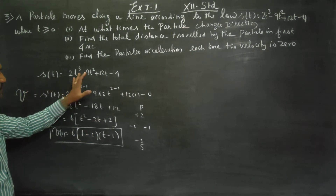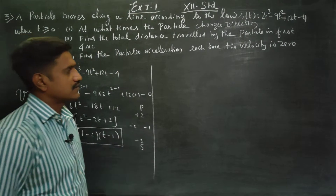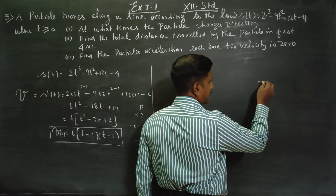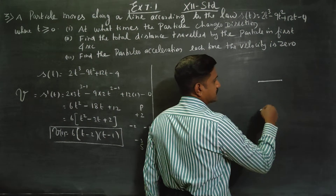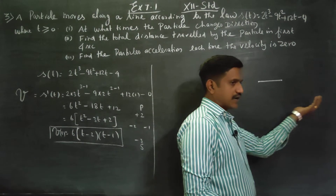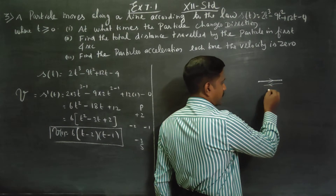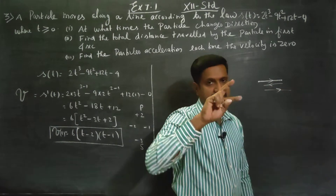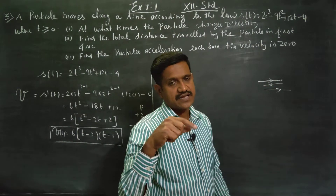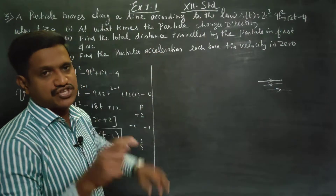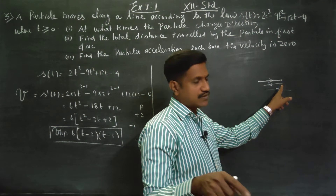This is the distance function and this is the velocity function. First question: at what time does the particle change direction? The particle moves in a straight line. At some time, it changes direction. When the particle changes direction, you have to stop — velocity becomes zero. That's why it returns.